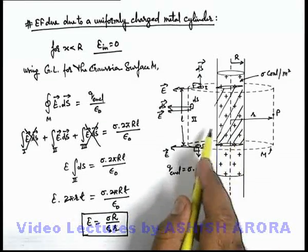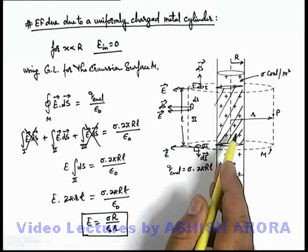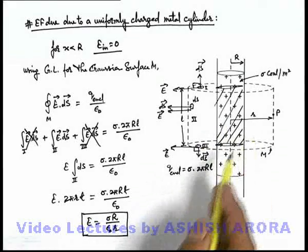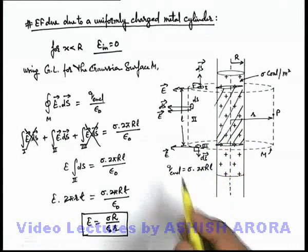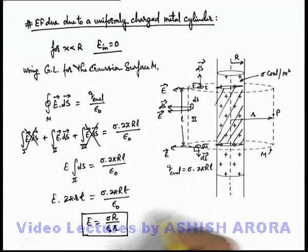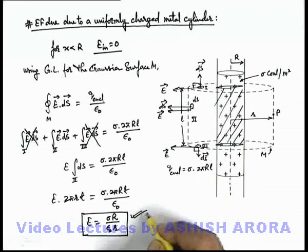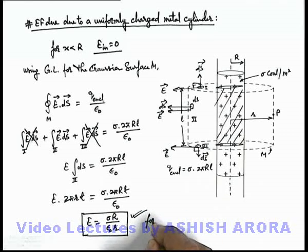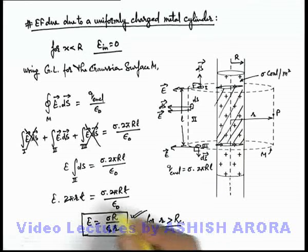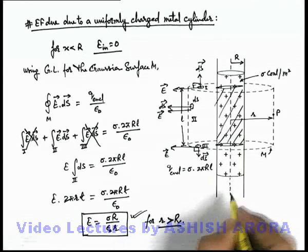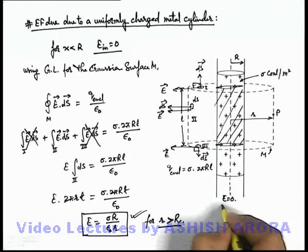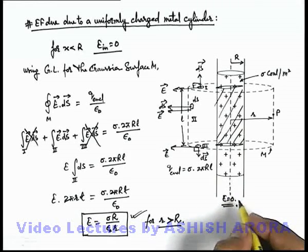Using the result of line charge which we have already done in the beginning of electrostatics. Be careful about this result: this is valid for small r more than capital R. Obviously we have discussed that if r is less than the radius, then inside electric field must be zero because it is a metal cylinder.